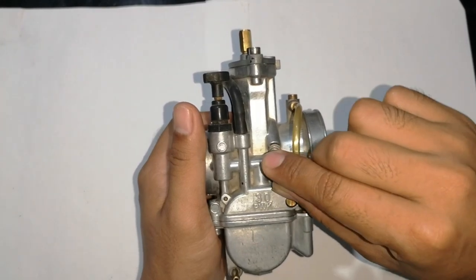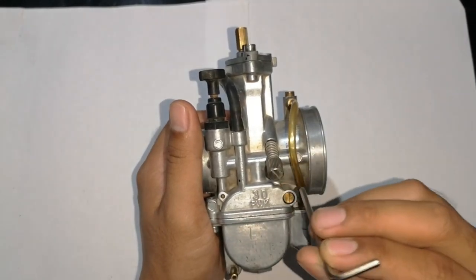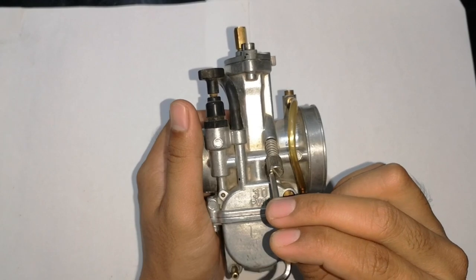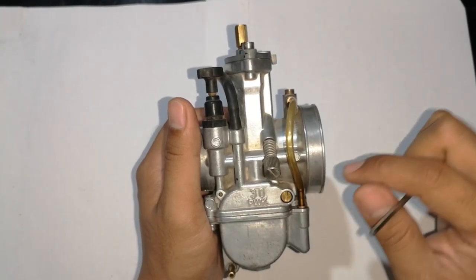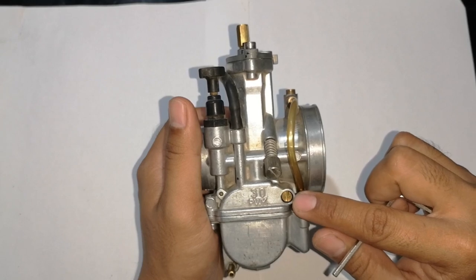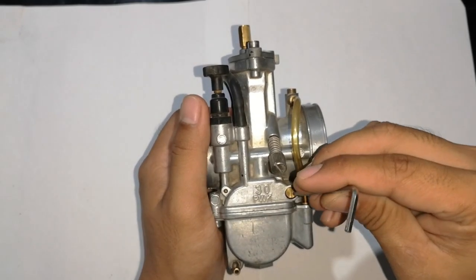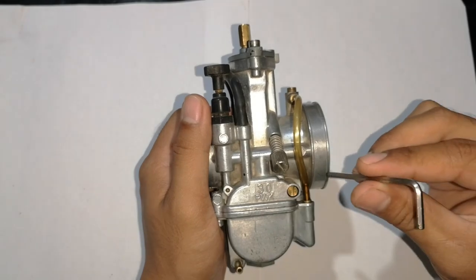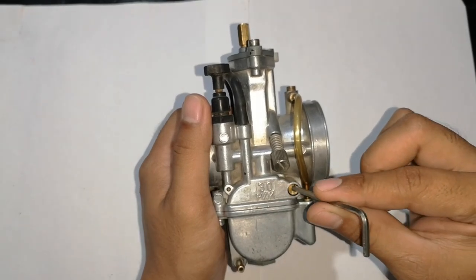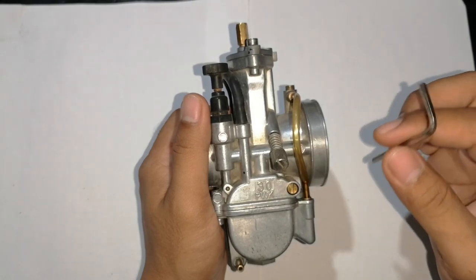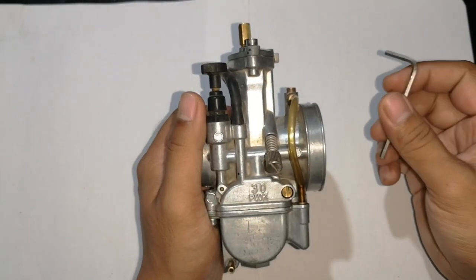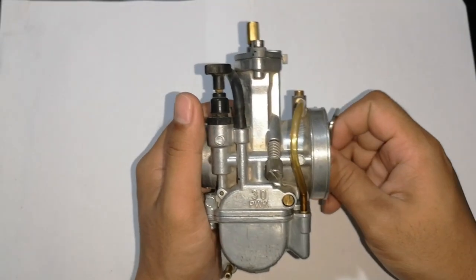Kung tataasan mong minor, pipihit mo ito clockwise. Kung bababaan mo naman, pipihit mo counterclockwise. Itong isa naman na nakalubog, ito ang tinatawag natin idle mixture screw or hangin. Pag ito, pinihit nyo pa-clockwise, ibig sabihin bumabawas ka ng hangin. Kung ipinipihit mo naman counterclockwise, dumadagdag ka ng hangin. So yun yung function nya.